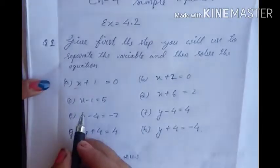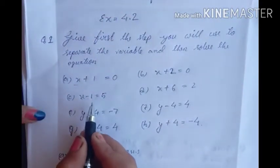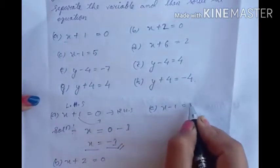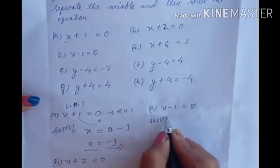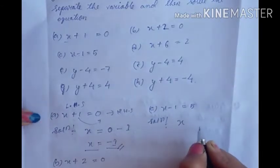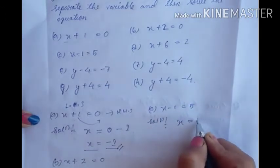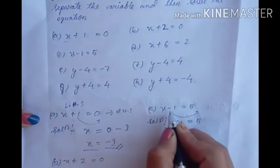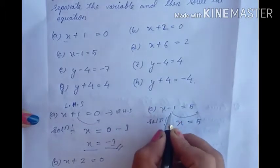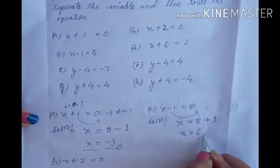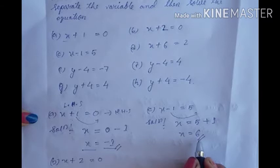For C: x minus 1 equal to 5. We transfer all the constant value to the right hand side. x remains here, and since minus 1 moves to the right hand side, minus becomes plus. So x equals 5 plus 1, which equals 6. The value of x is 6.